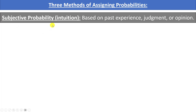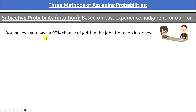An example of subjective probability: you might believe you have a 90% chance of getting a job after an interview because you felt it went well. But the interviewer might only put the probability of offering you the job at 30%. Because subjective probability varies by person, we try to avoid it whenever possible and use one of the other two methods.